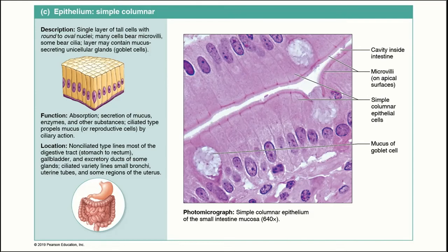Next we have simple columnar epithelium — a single layer of tall, column-shaped cells — and there are two varieties. There is a simple columnar epithelium without cilia and a variety that has cilia. The non-ciliated variety functions in absorption and secretion and is primarily found in the digestive tract, from the stomach through all of the intestines to the rectum.